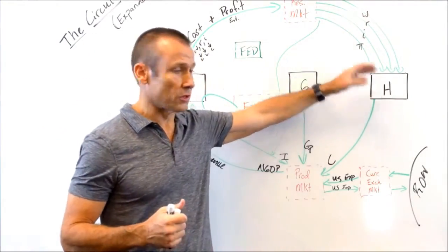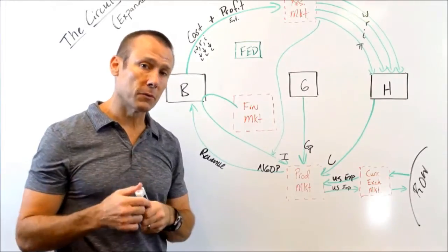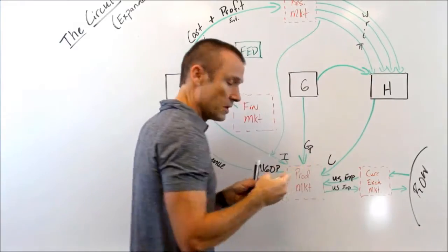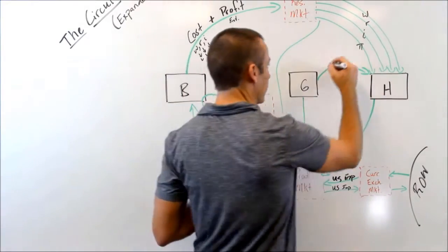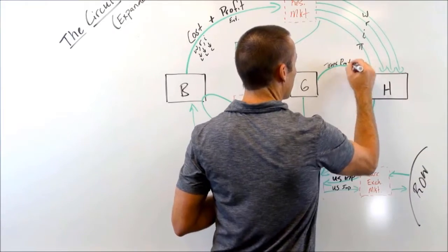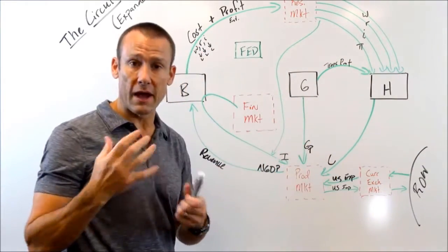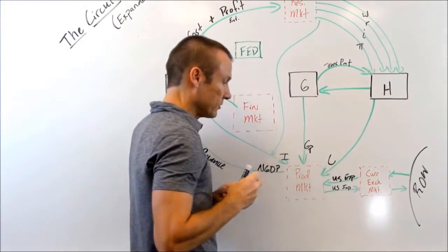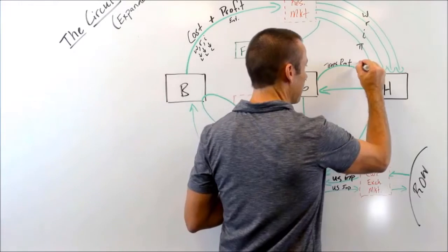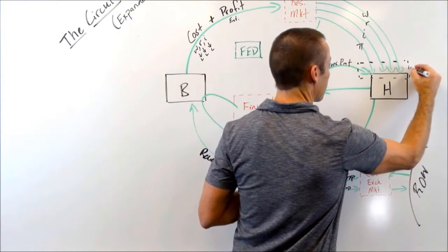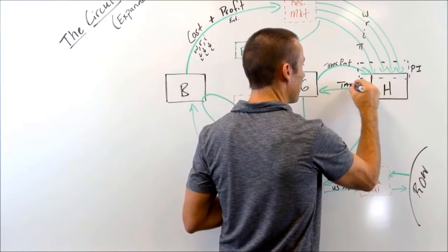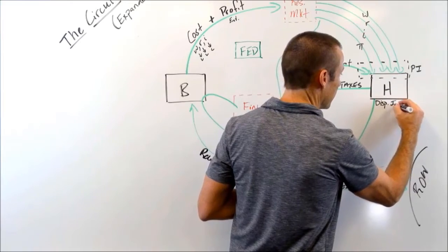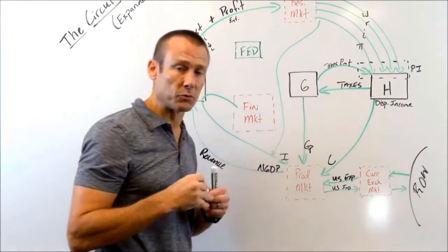Let me start with households. They've got income coming in. That is not all of their personal income, though, because government also supplies some income to households. And those are transfer payments or government transfers. So there's our transfer payments right there. Of course, households have to pay some taxes. So we're going to go ahead and put taxes in right there. Now, what I like to do is put a little dotted box right here to make sure that we understand that that is personal income. Here's the taxes that they're paying.